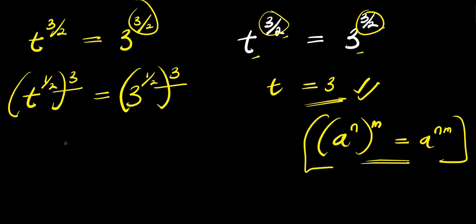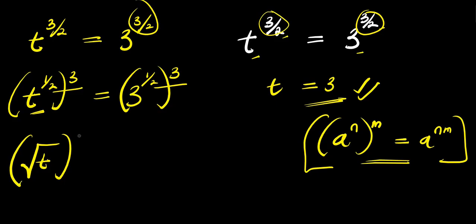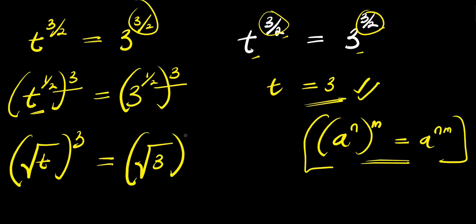The next thing we are going to do is, instead of having t to the power of 1 over 2, we can have it as square root of t, raised to the power of 3, and this equals square root of 3, raised to the power of 3.